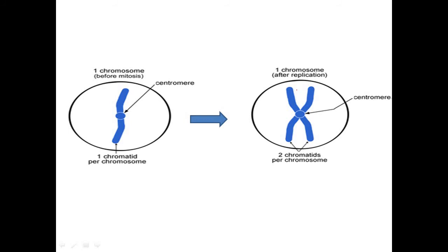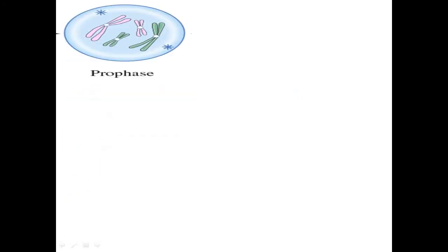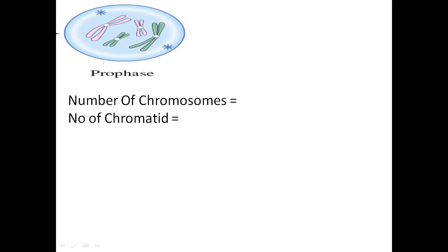Let us discuss the different phases of mitosis and how we count chromosome numbers in each phase. In prophase, we count the functional centromeres — one, two, three, and four — so the number of centromeres is four, meaning the number of chromosomes is four. Each chromosome contains two sister chromatids, so the number of chromatids is four times two, which equals eight. In prophase: chromosomes = 4, chromatids = 8.